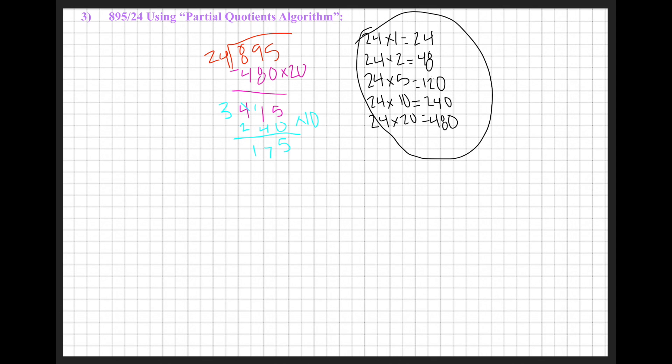My next multiple that I could subtract from 175 is 120. 120 is 24 times 5. So 24 times 5 equals 120. I'm going to subtract 120 from 175 to find 55.